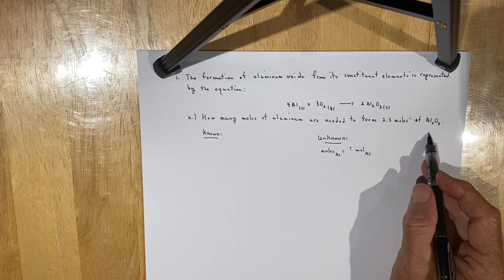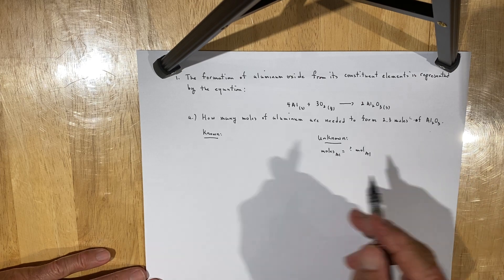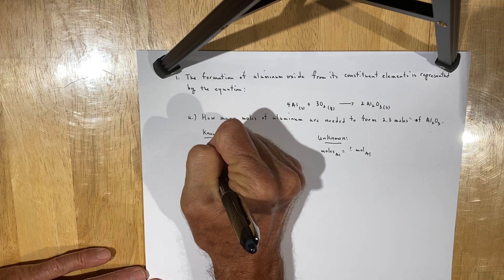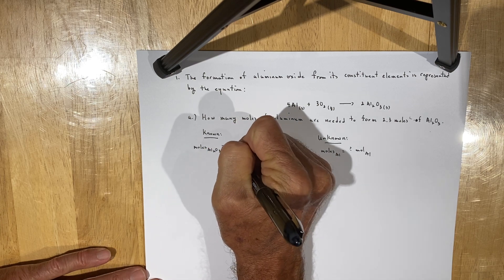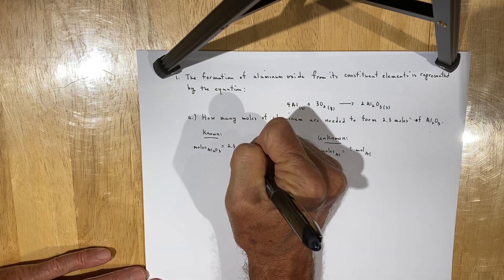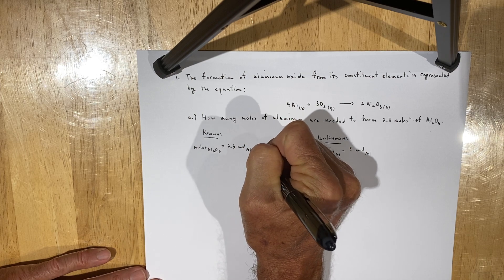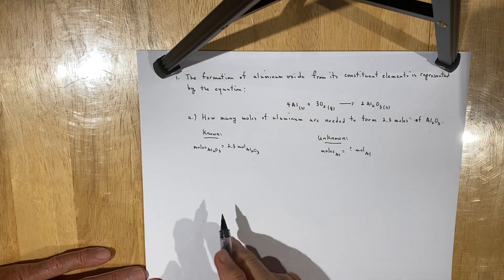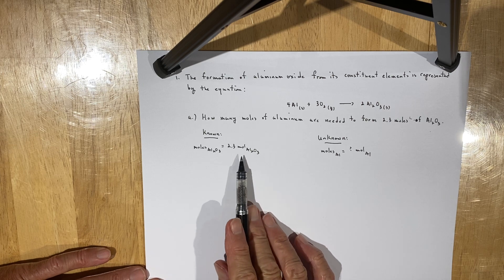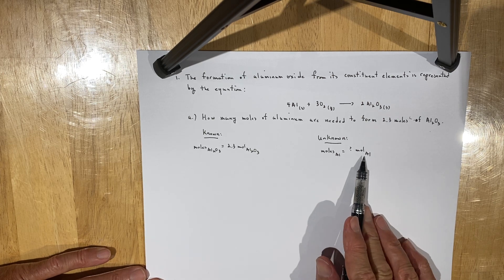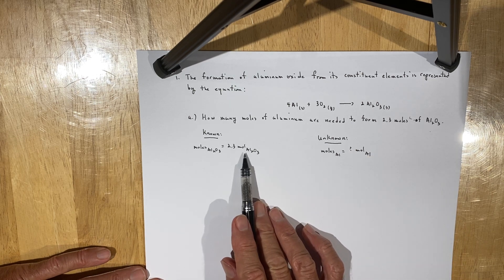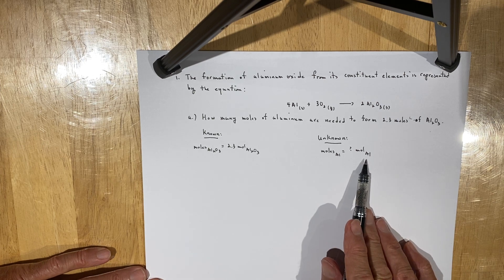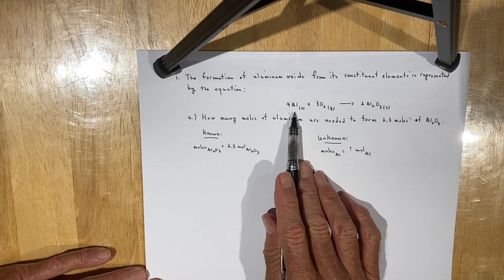You know that you have to produce a given number of moles of aluminum oxide, which is 2.3 moles of Al₂O₃. So you've got to determine how you're going to convert moles of aluminum oxide to moles of aluminum. In other words, if you need to produce 2.3 moles of aluminum oxide, how many moles of aluminum are required as a reactant?